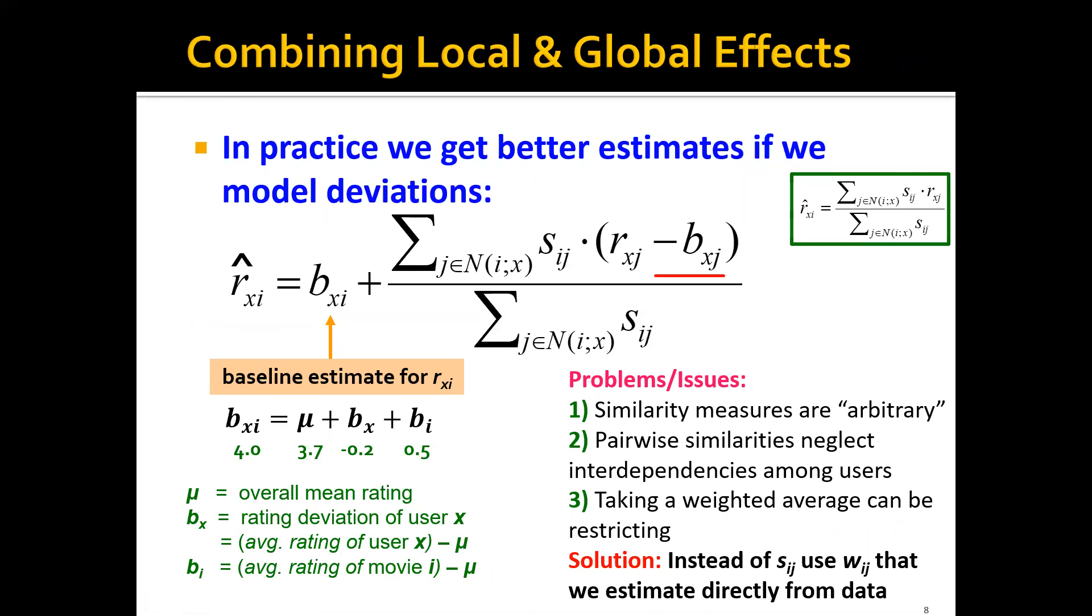So now that we have figured out how to handle the global effect and the local effect, but how do we combine these two models? The solution is actually quite simple. It can be thought of as a sum of two terms, where the first term is the baseline estimate for r_xi. This is just the global average of 3.7 plus the user bias, which is minus 0.2 in the previous example, and plus the item bias, which is 0.5 in the previous example.